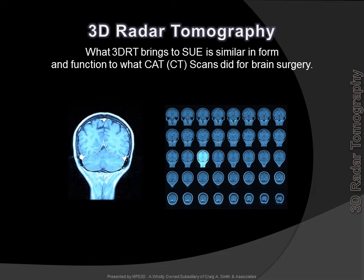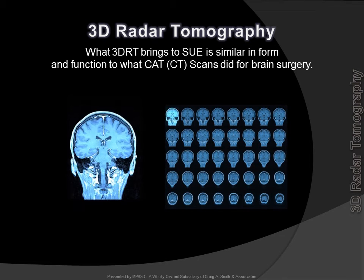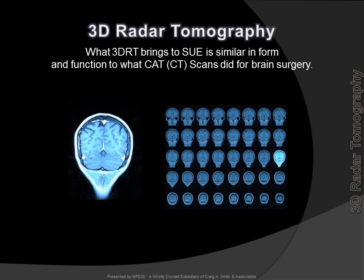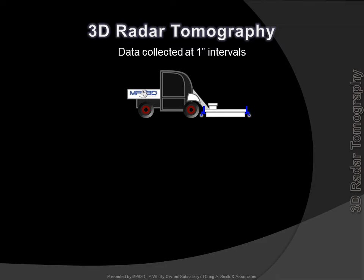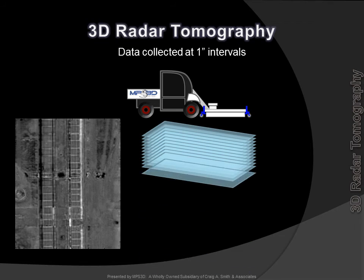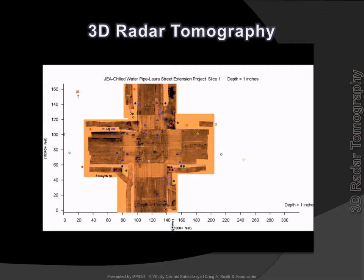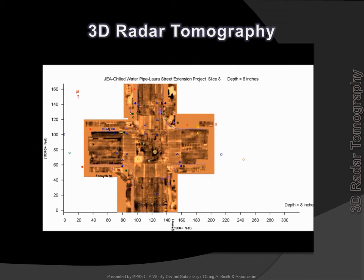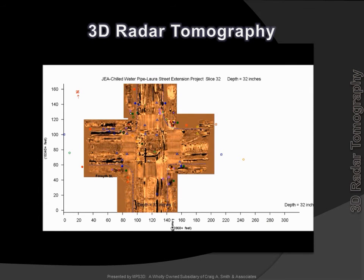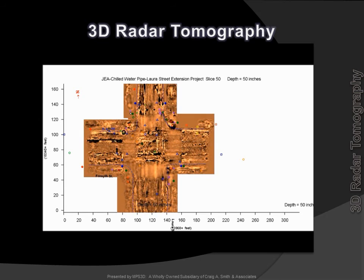What 3D RT brings to SUE is similar in function to what the CAT scan did for brain surgery. RT data is collected and viewable in 1-inch slice intervals. The resulting slice imagery is capable of near photographic resolution. 3D RT can image large areas very quickly and provides the designer with precision information of the location of existing subsurface facilities. The process scans result in a slice movie that descends from the surface downward through the underground, revealing utilities and other anomalies as it travels.